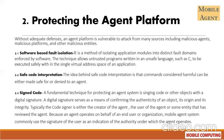Third is signed code. A fundamental technique for protecting an agent system is signing code and other objects with a digital signature. A digital signature serves as a means of confirming the authenticity of an object, its origin, and its integrity.